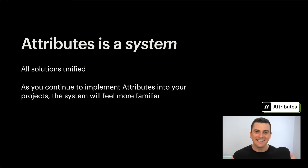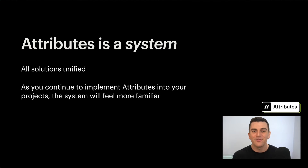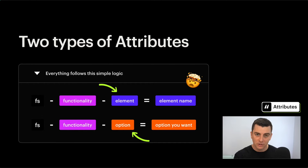Attributes is a system. We've built it as a system so all of our solutions can feel unified and can be approached with the same mindset. As you continue to implement attributes in your project, the system will feel more familiar because every solution has the same process. There are two types of attributes: elements and options. The structure is: functionality, element, element name — or functionality, option, option you want.